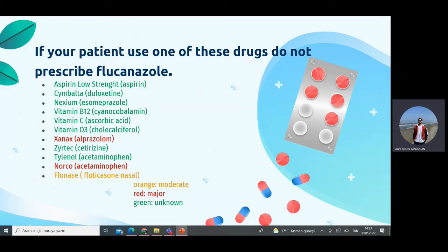Some of those drugs include aspirin, Cymbalta, Nexium, Vitamin B12, Vitamin C, Vitamin D3, Xanax, Zyrtec, Tylenol, Norco, and fluconazole. The red ones — Xanax (alprazolam) and Norco (acetaminophen/opioid) — are the major interactions with high risk. Fluconazole is listed as a moderate (orange) interaction, and the green ones are unknown but should be monitored carefully. If your patient is using these drugs, you should not prescribe fluconazole as they can interact and cause serious problems.